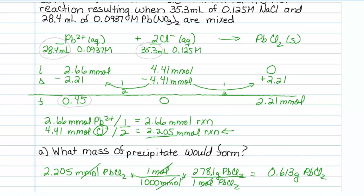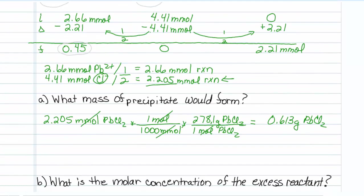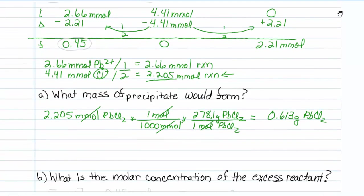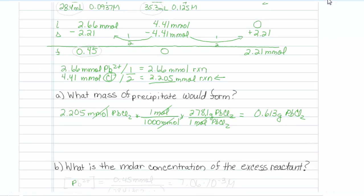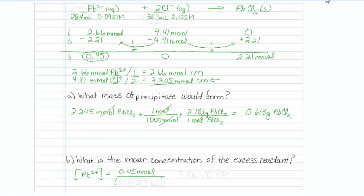Last question. What is the molar concentration of the excess reactant? The excess reactant is lead 2 plus, and it's asking for the concentration. So let's look at the final row, and we notice that we have 0.45 millimoles, and now we need to divide it by our milliliters to get concentration, millimoles per milliliter.